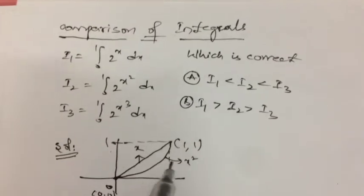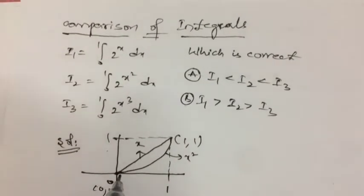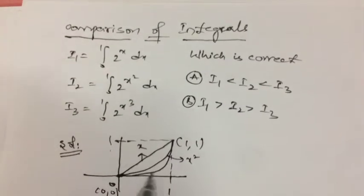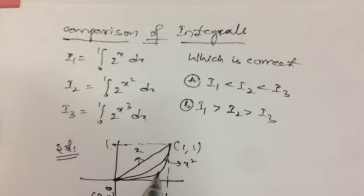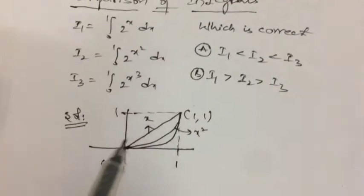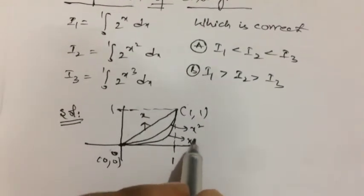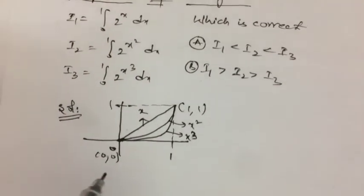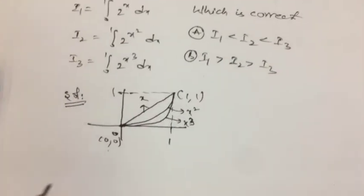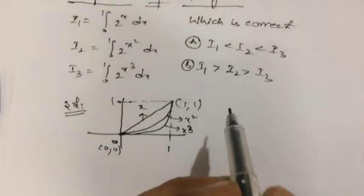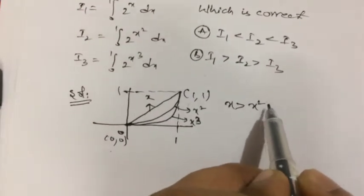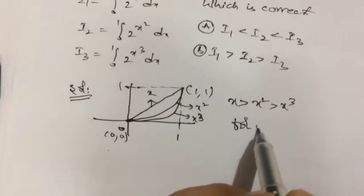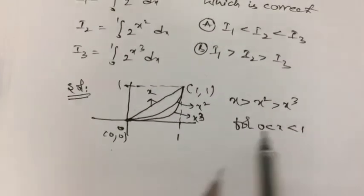Then if you look at x³, it is still lesser than x², because x² is greater than x³ in 0 to 1. This is how the three graphs will appear in 0 to 1. So if you see here, the variation of x, x², x³ in the given interval is x is greater than x² greater than x³ for 0 less than x less than 1, clearly.